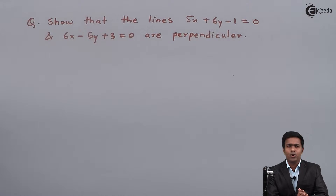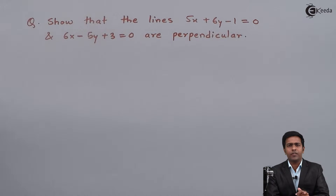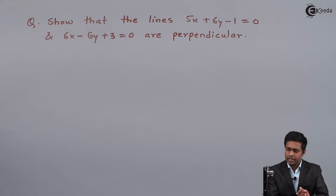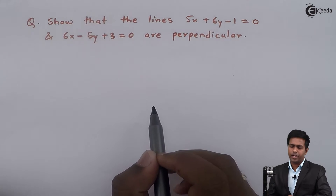To prove that two lines are perpendicular, we will take help of slopes. We know the property: if the multiplication of two slopes is equal to minus 1, then we say the two lines are perpendicular. So we will show that the multiplication of slopes of these two lines is minus 1.